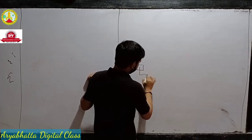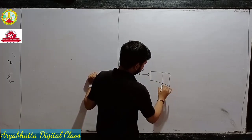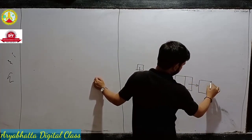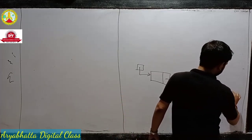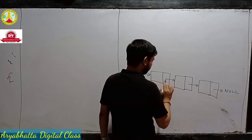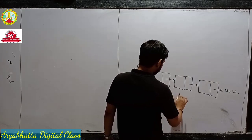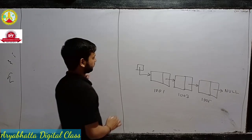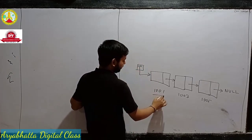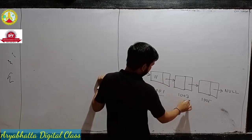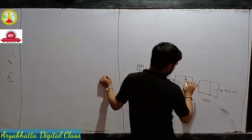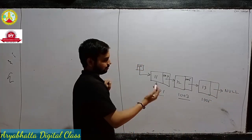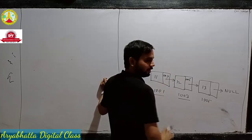Let me show you again. This is a start pointer. This is a linked list and it points to null. Suppose the memory addresses are 1001 and 1005. The start pointer stores the hash memory address. This is the element. 103 stores this, and this is null because there is nothing after that node. This is called a node — this is the info part, and this is the link or pointer part.